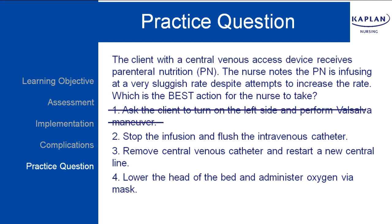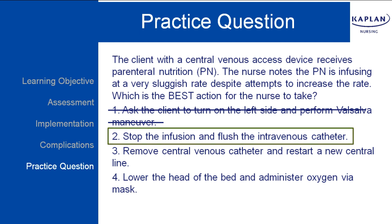Number one is incorrect. The client should turn on the left side and perform the Valsalva maneuver if there are symptoms of air embolism, such as tachypnea or cyanosis, which are not present in this question. Number two is the correct answer — the infusion should be stopped and flushed to unclog the catheter. Number three is incorrect; the nurse should not discontinue a central venous line or restart a new central line. Number four is also incorrect; lowering the head of the bed and administering oxygen is only indicated for signs of air embolism. This concludes the video on parenteral nutrition.